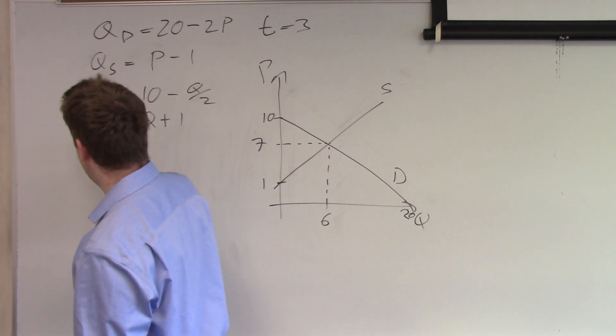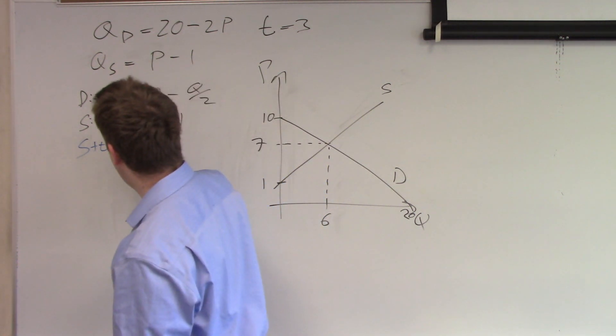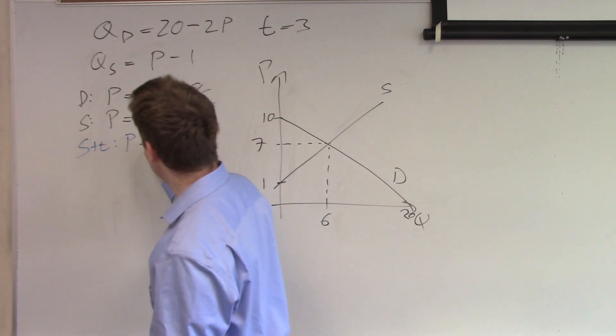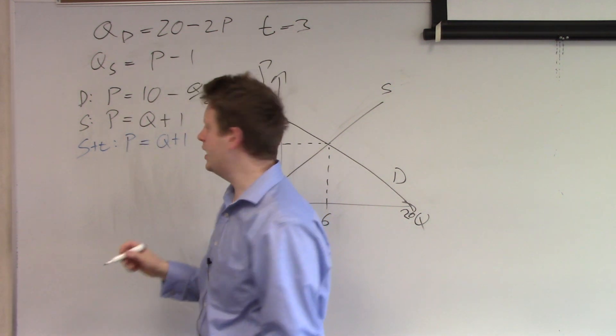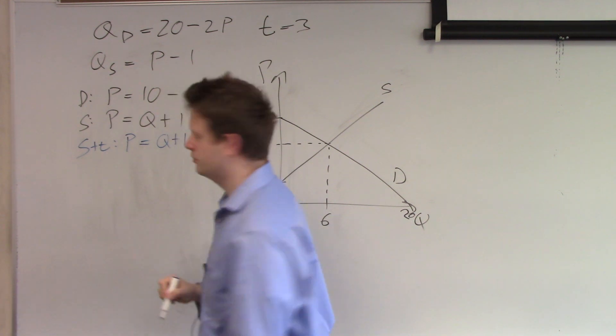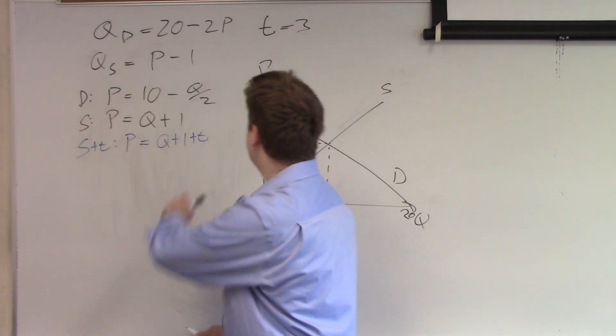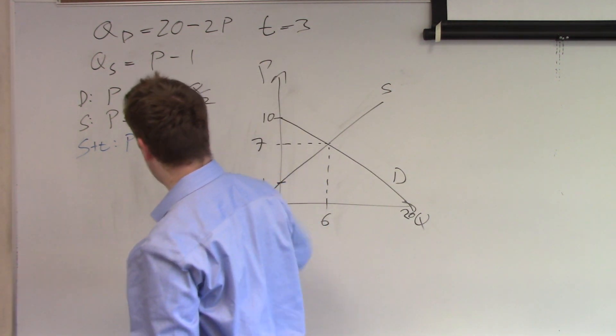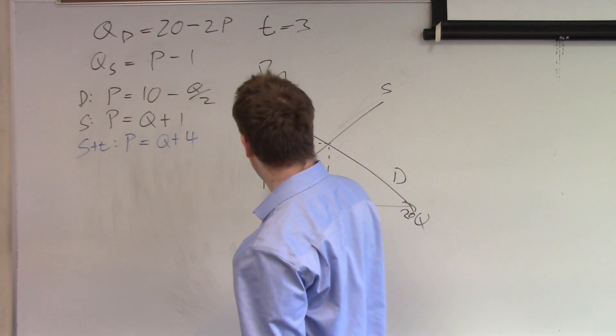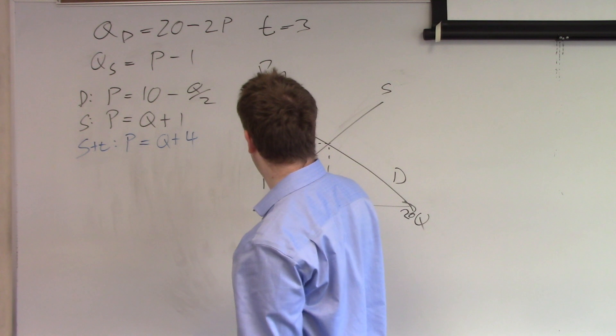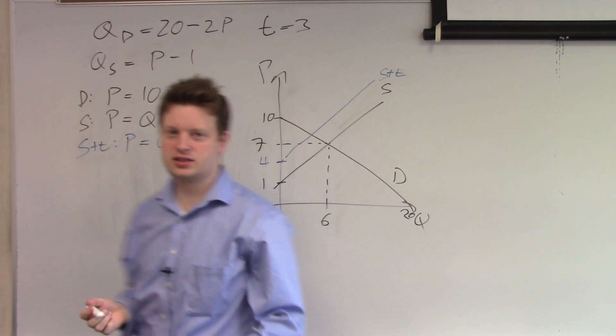So we label it supply plus tax and this supply is equal to P equals Q plus 1 which is the original supply plus tax. So we get, since the tax is 3, we get Q plus 4 here. So now we can draw this in here. We have 4 and we have the supply plus tax here.